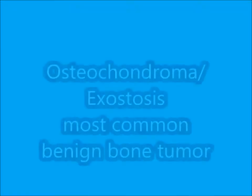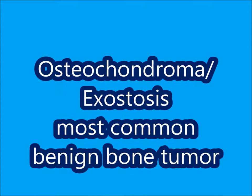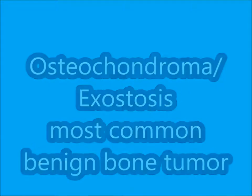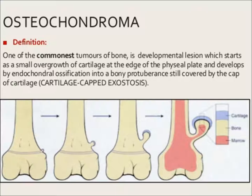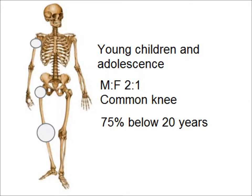Osteochondroma, or exostosis, is the most common benign tumor of bone. It is a developmental lesion which starts as a small overgrowth of cartilage at the edge of the physeal plate and develops by endochondral ossification into a bony protuberance still covered by a cap of cartilage. It is more common in young children and adolescents; males are affected more than females. The common location is the knee joint, and 75% of patients are below 20 years of age.